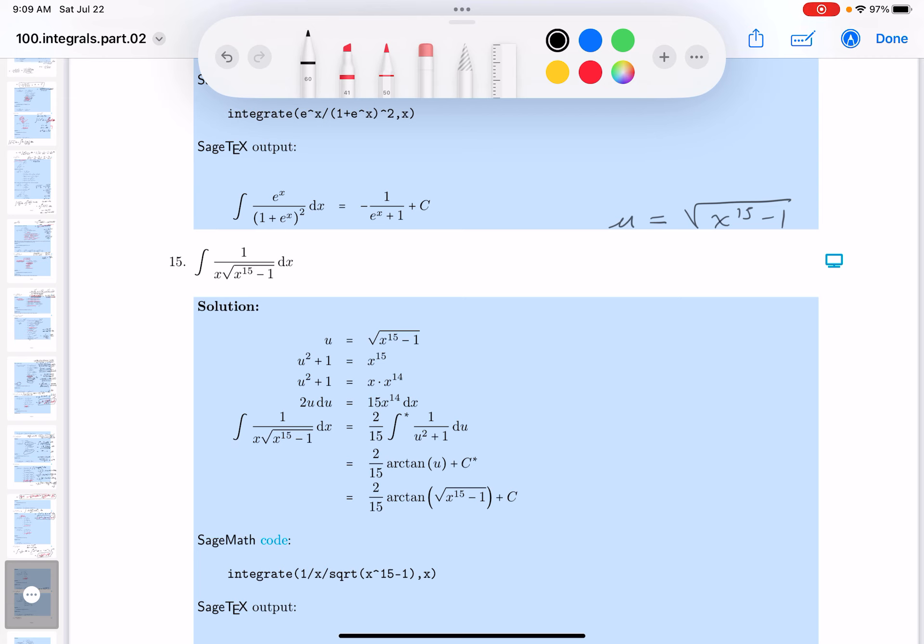Before I do that, though, I want to square both sides, and what do you get? You get u squared equals x to the 15th minus 1. And then I can say u squared plus 1 equals x to the 15th power.